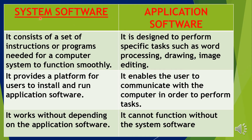Difference between System Software and Application Software: System Software consists of a set of instructions or programs needed for a computer system to function smoothly. It provides a platform for users to install and run application software and works without depending on it. Application Software is designed to perform specific tasks such as word processing, drawing, and image editing. It enables the user to communicate with the computer to perform tasks, but cannot function without the system software.